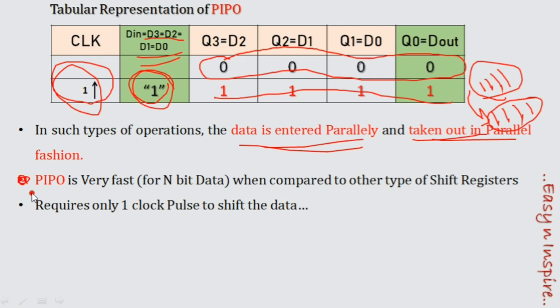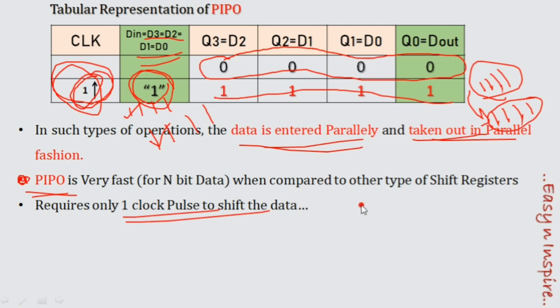This is a very important point about PIPO: the parallel input parallel output shift register is very fast compared to the remaining three types — SISO, SIPO, and PISO. Only one clock pulse is enough to get the output. Whatever is given in parallel comes out in parallel, so PIPO requires only one clock pulse to shift the data.